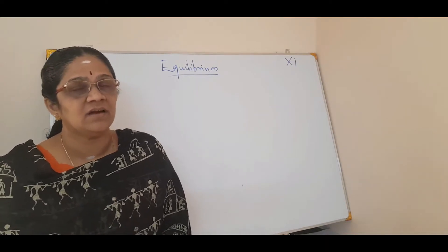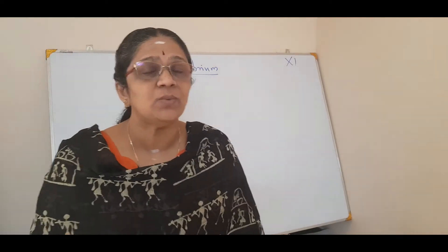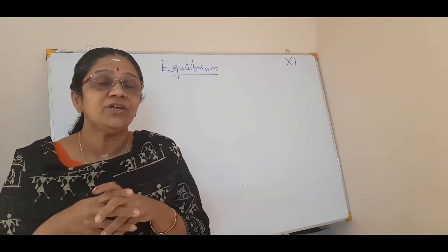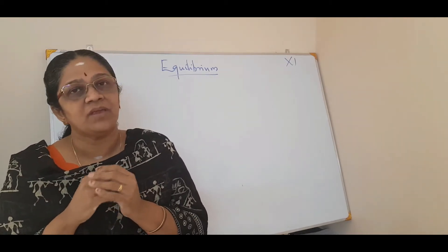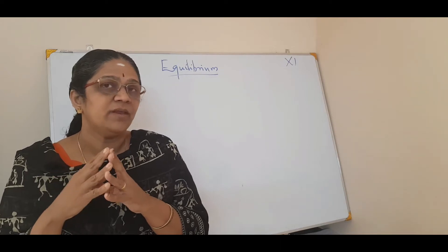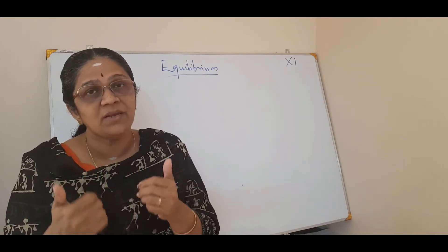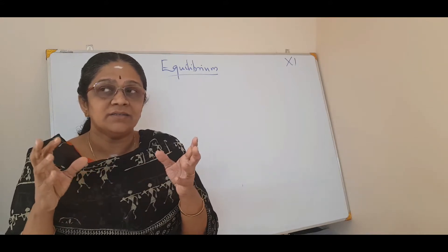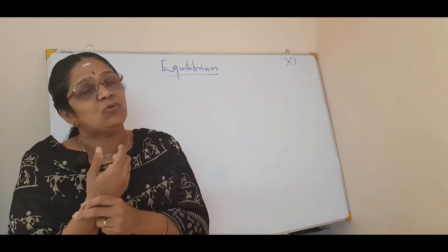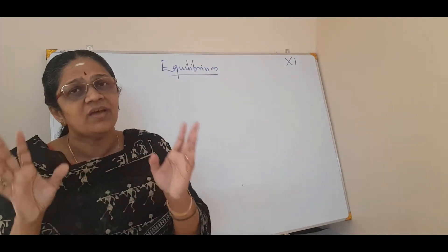Today we will see the next chapter, which is equilibrium. We are all familiar with the word equilibrium — it means something in a state of stable condition. In chemistry, equilibrium can be seen in both physical processes and chemical processes. Even in our body, in metabolism, there is equilibrium, such as in the transport of oxygen by hemoglobin molecules from the lungs to the muscles.